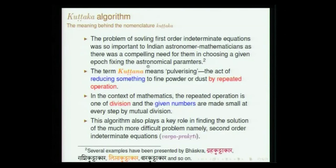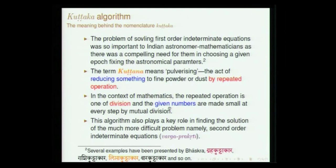Why were they worried about solving this? I will show through an example the context in which they had to find a solution. This is primarily to solve astronomical problems. Kuttakara refers to the process of pulverizing — basically a repeated operation, like hammering. Given two numbers, we keep on successively dividing one by the other, similar to the Euclidean algorithm. By mutual division, we reduce the magnitude of those two numbers, stopping at some stage to construct the values of x and y.